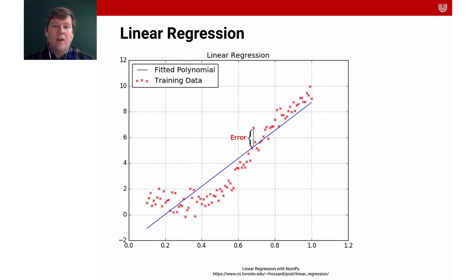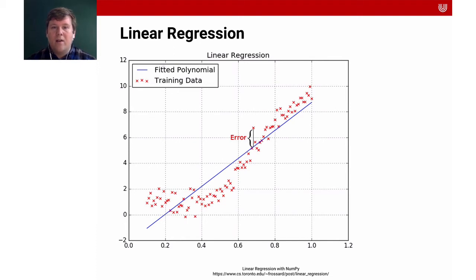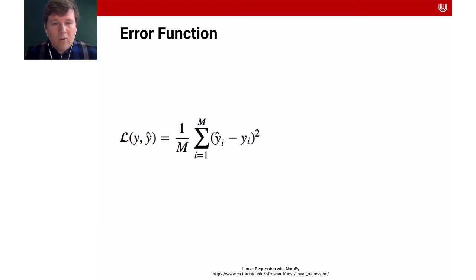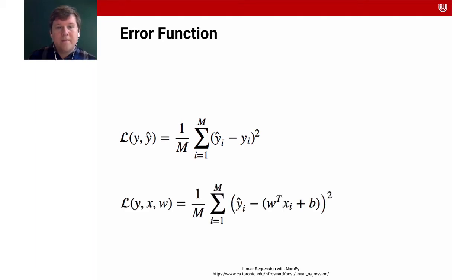Here again is a visualization of all the data points and the line that we fit. We see that there's an error for almost every data point — we're almost never perfect. The error is always the difference between an individual data point (like the red cross) and the blue fitted line.